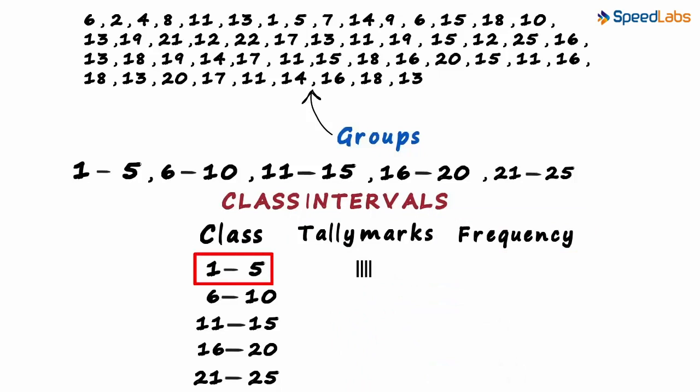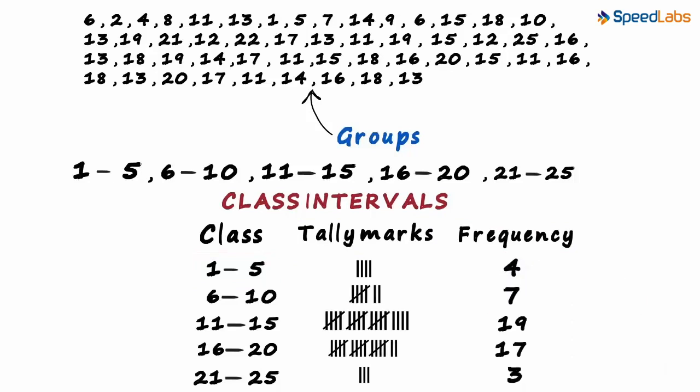Both 1 and 5 are included. That will be its frequency. This is how the rest of the table pans out. There are seven numbers in the second class, 19 numbers in the third class, 17 numbers in the fourth class, and three numbers in the fifth class.